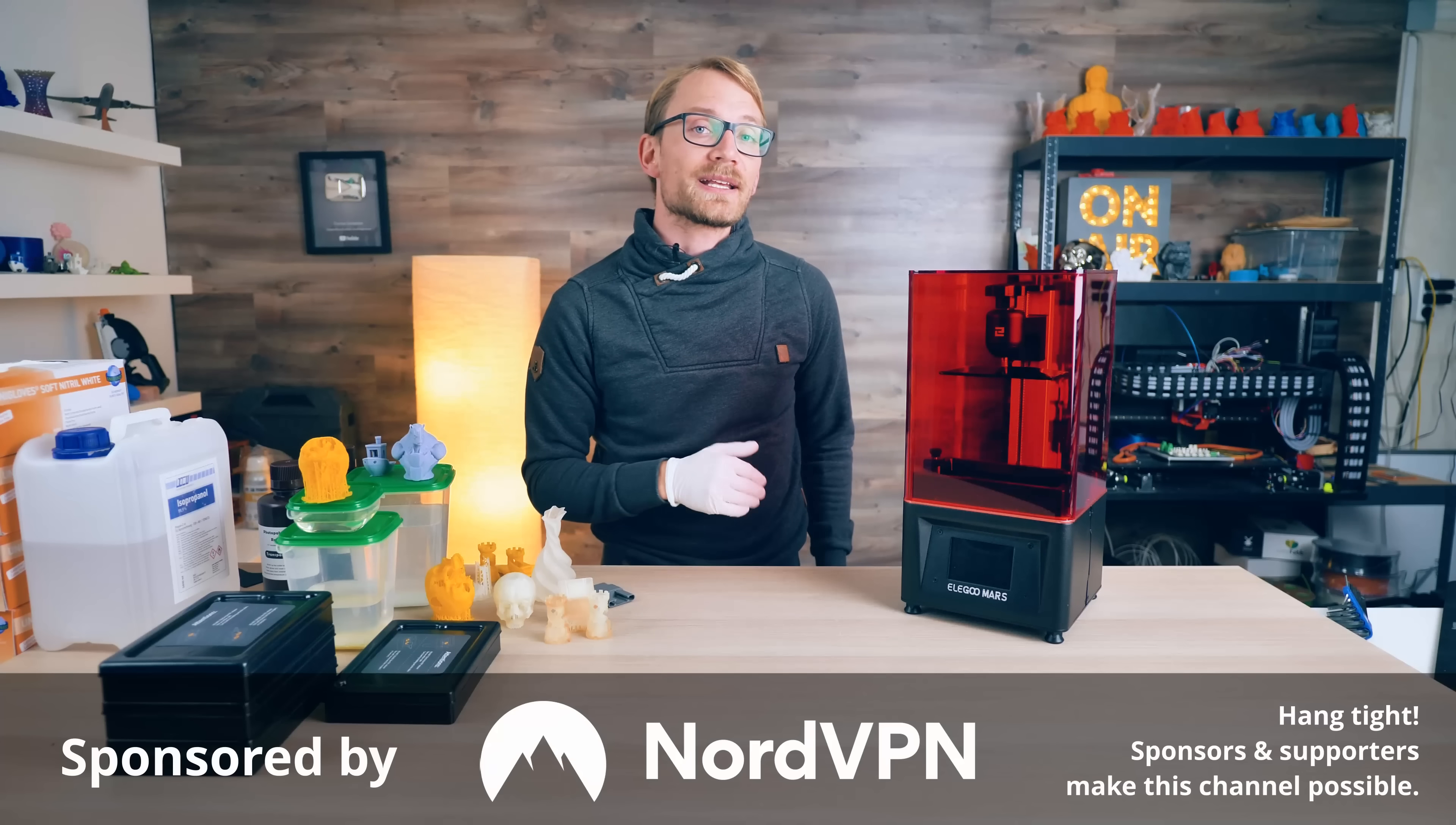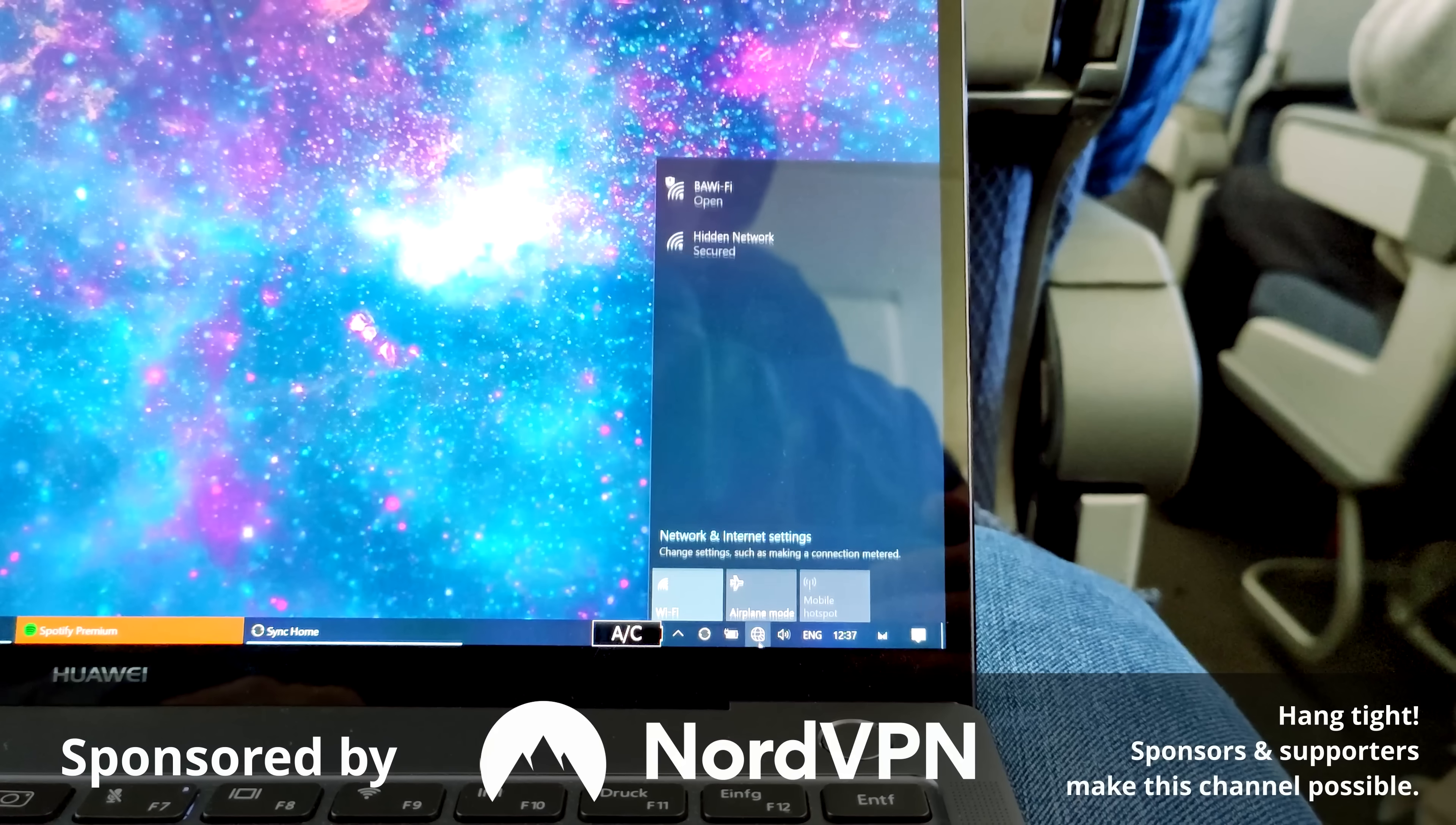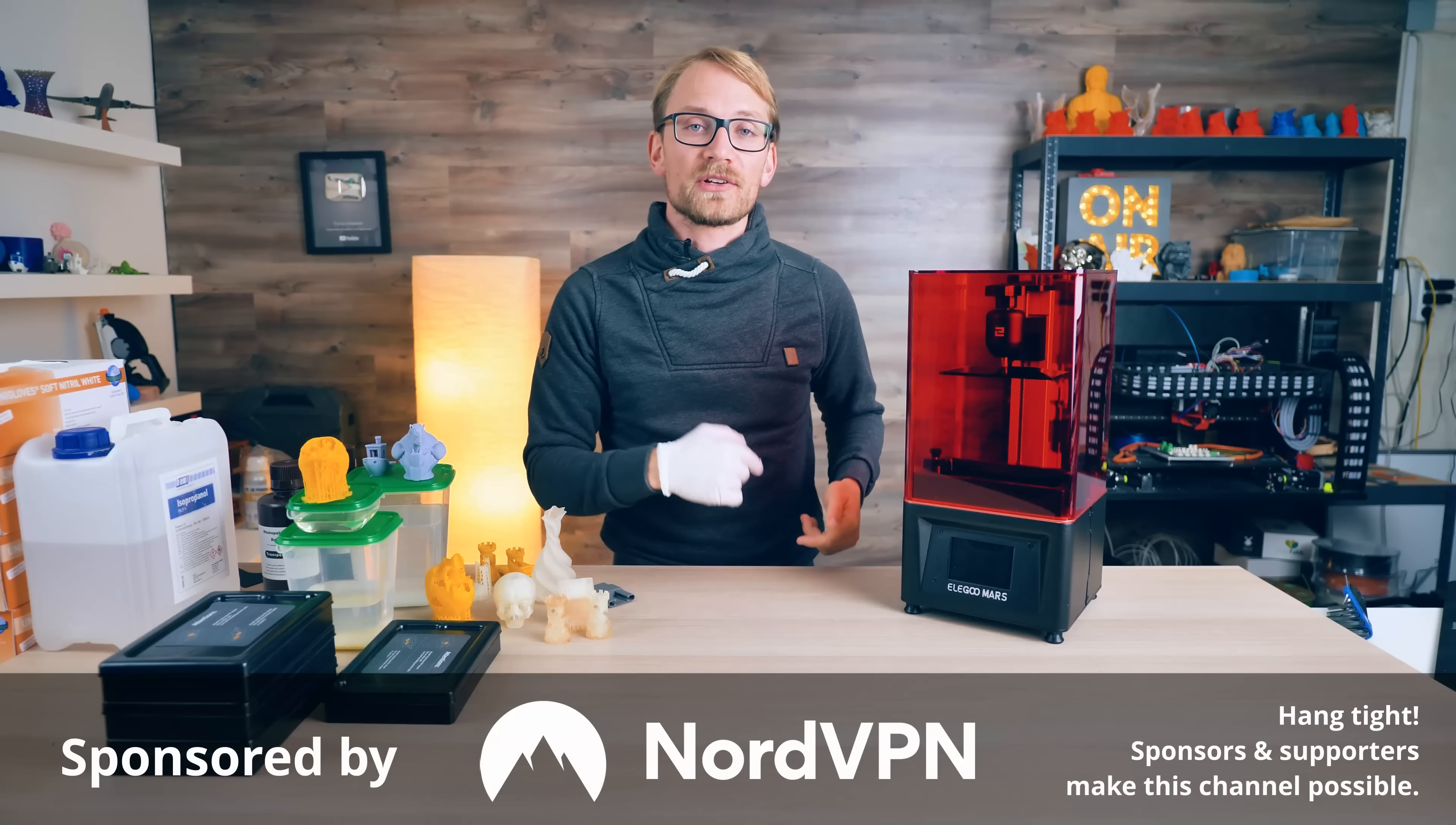When I was traveling this last weekend, I used their VPN service to stay safe in public Wi-Fis, at the airport, in my hotel, and in any other public Wi-Fi I was using along the way. What a VPN does is that it adds a layer of encryption on all the data to and from your device. And while it's encrypted, nobody can spy on your data or manipulate what you're getting.